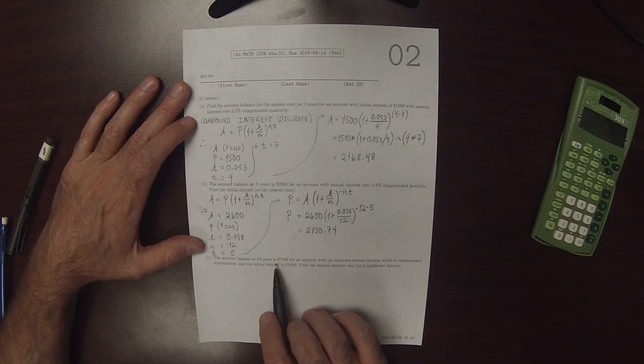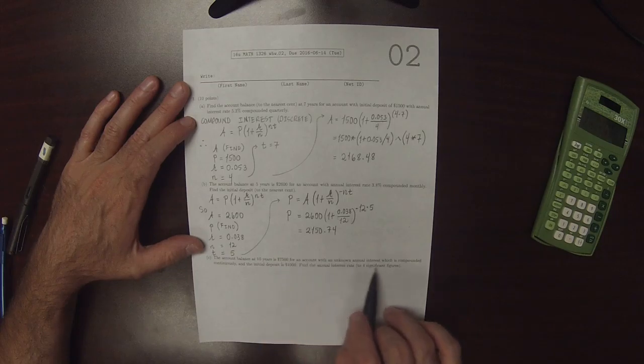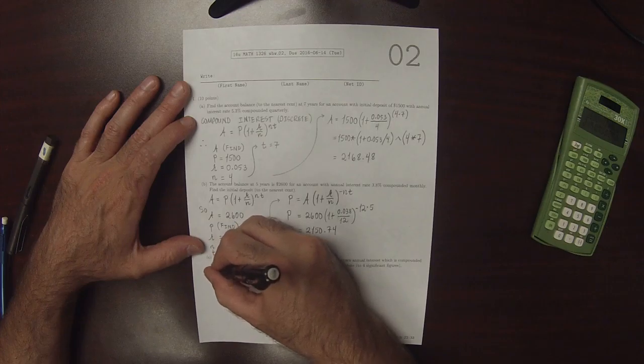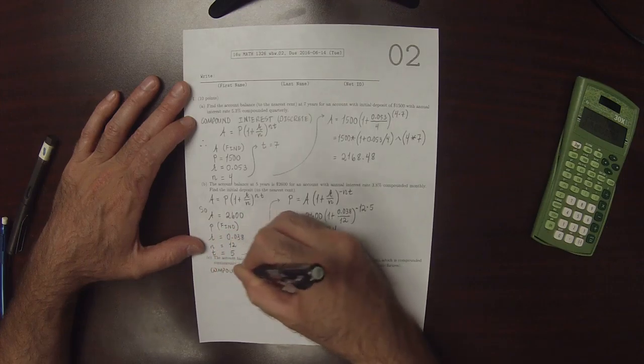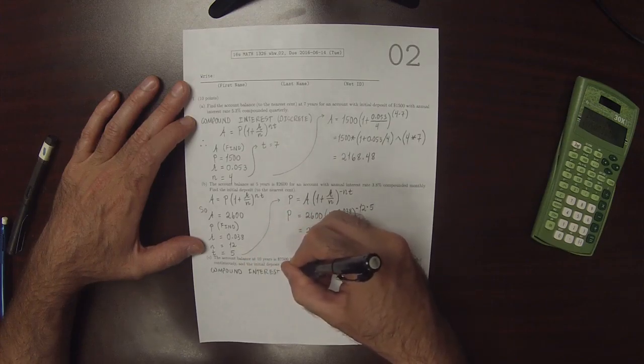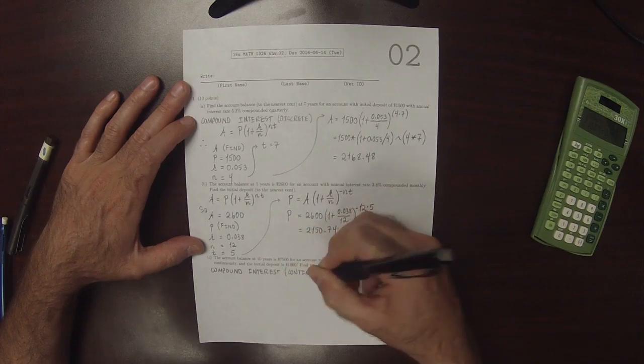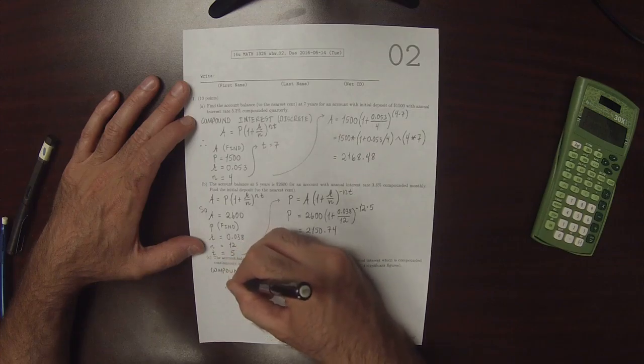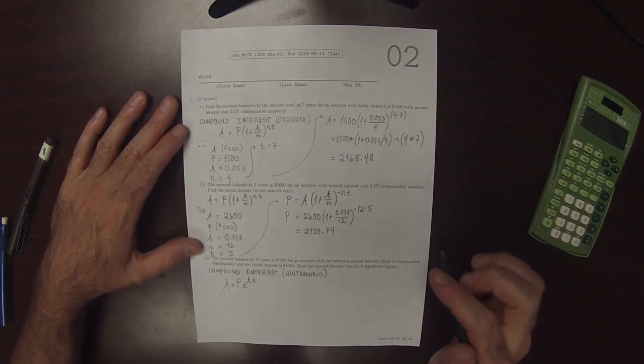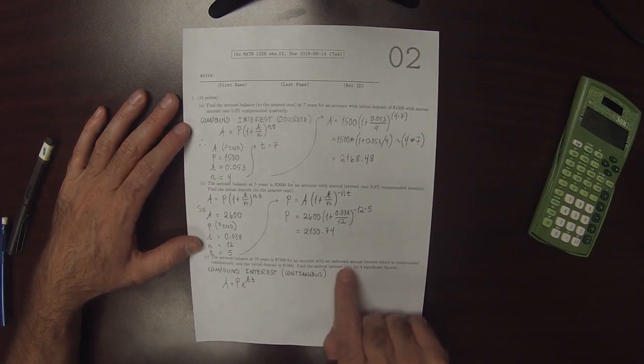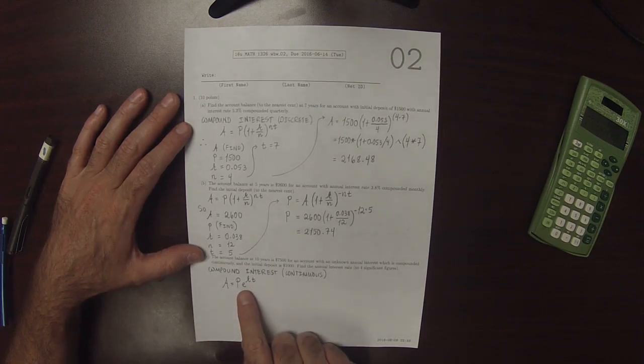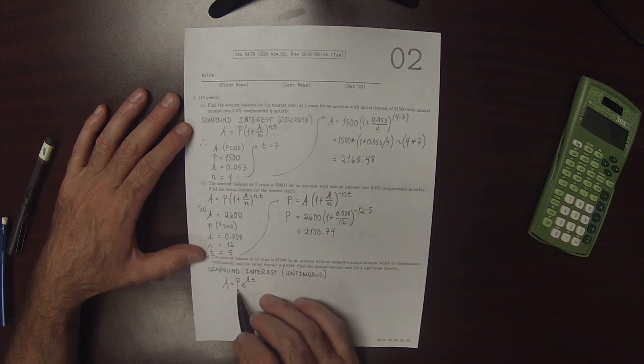Okay, so the account balance after 10 years is $7,500 with an unknown annual interest rate which is compounded continuously. Okay, so this one is different. This is compound interest, and in this case it's continuous. So with an unknown annual interest rate, find the annual interest rate to four significant figures. Okay, well, so now we're going to know A and P and T, but not R.